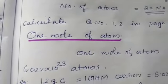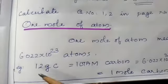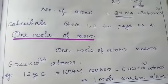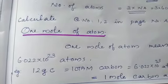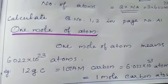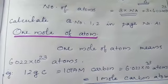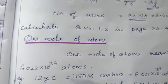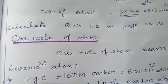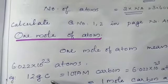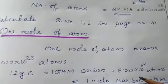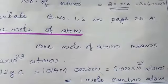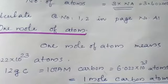What do you mean by 1 mol of atom? 1 mol of atom means 6.022 × 10²³ atoms. You have to read the textbook carefully on these pages. For example, 12 grams of carbon equals 1 GAM, since the atomic mass of carbon is 12 g. That is equal to 1 GAM of carbon, which equals 6.022 × 10²³ atoms, and is the same as 1 mol of carbon atom.